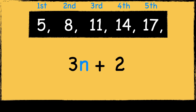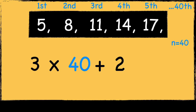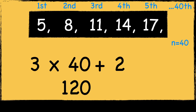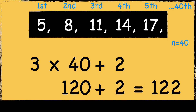We can use the nth term expression to find any term in the sequence. So now we can find the 40th term of the sequence by using 40 in place of n. 3 times 40 is 120, and then add 2 is 122. So the 40th term in this sequence is 122.